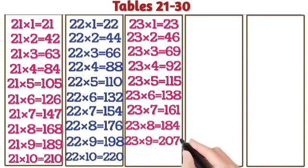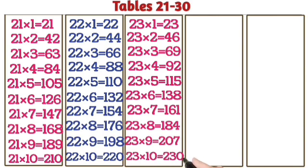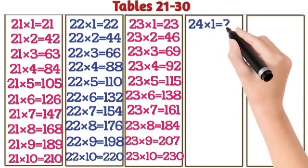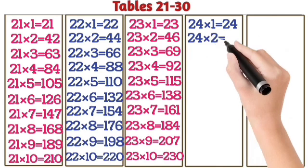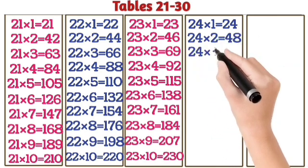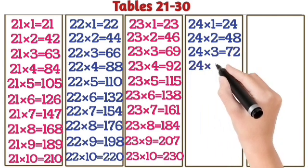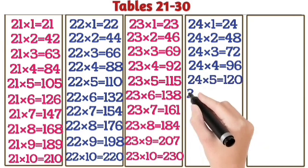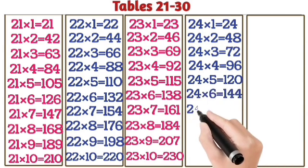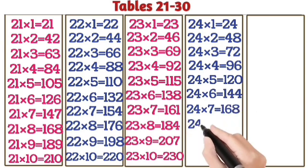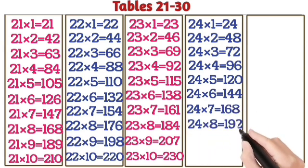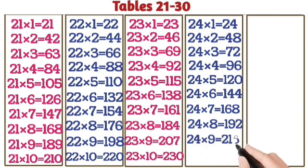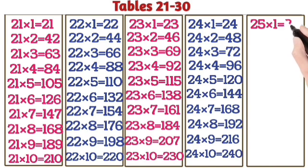23 nines are 207. 23 tens are 230. 24 ones are 24. 24 twos are 48. 24 threes are 172. 24 fours are 96. 24 fives are 120. 24 sixes are 144. 24 sevens are 168. 24 eights are 192. 24 nines are 216. 24 tens are 240.